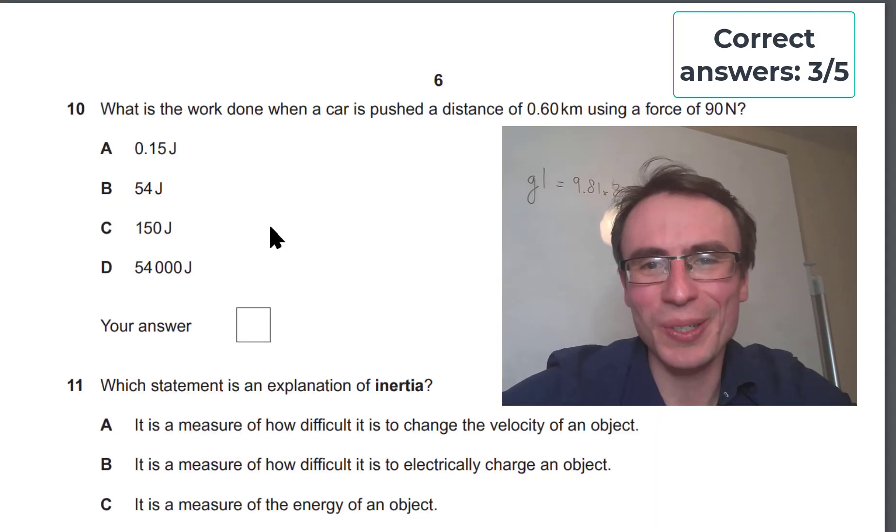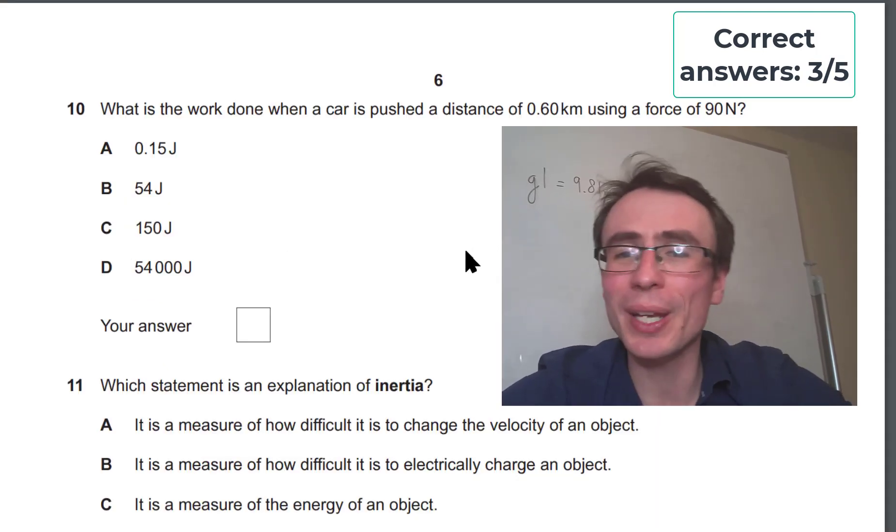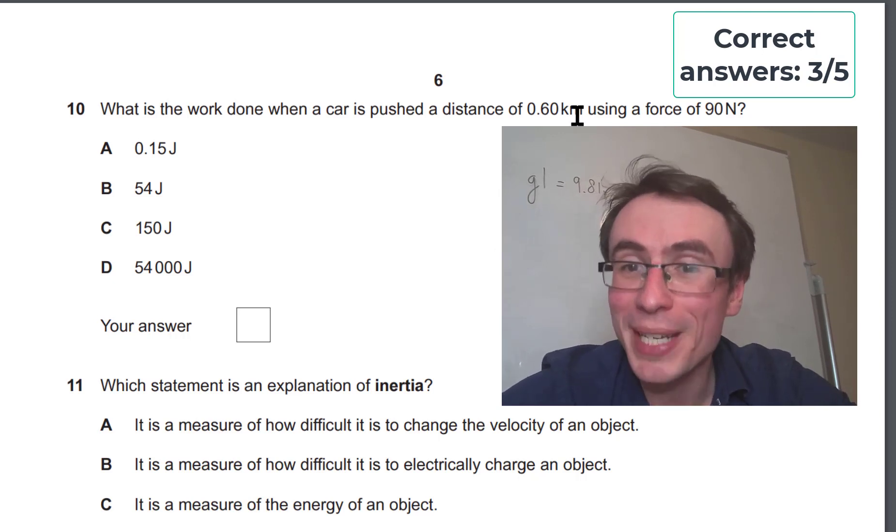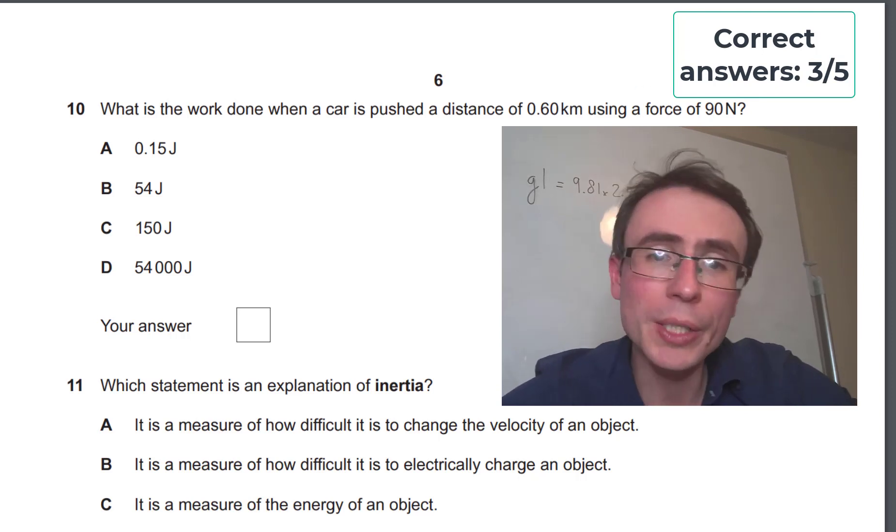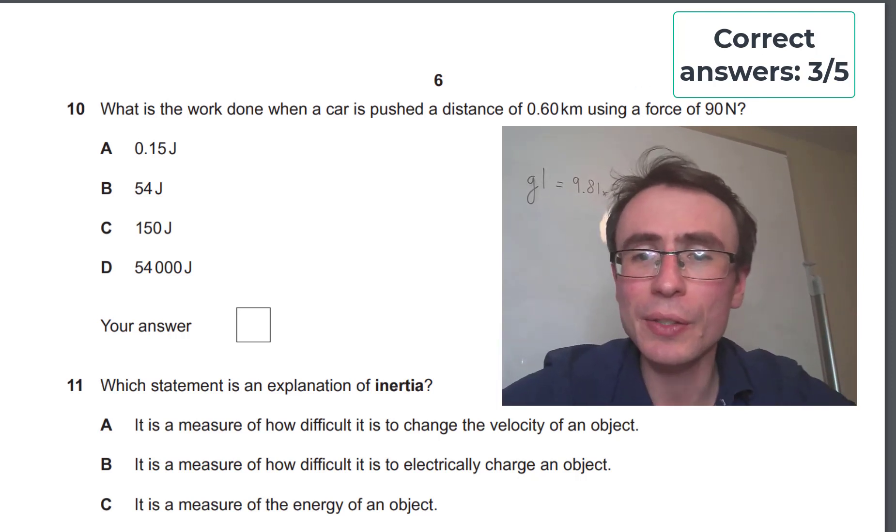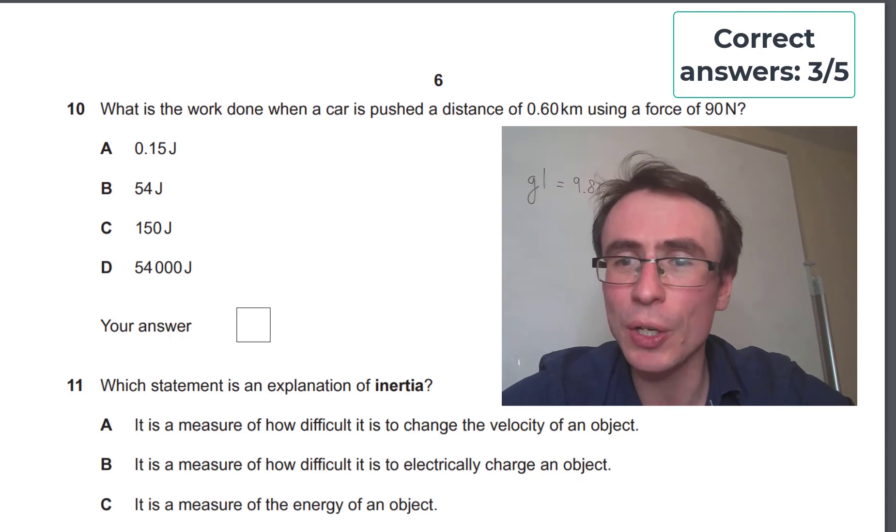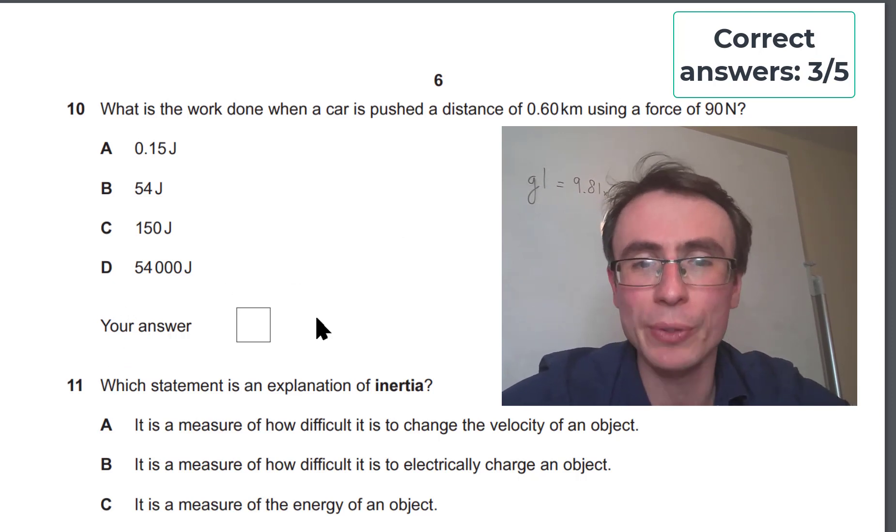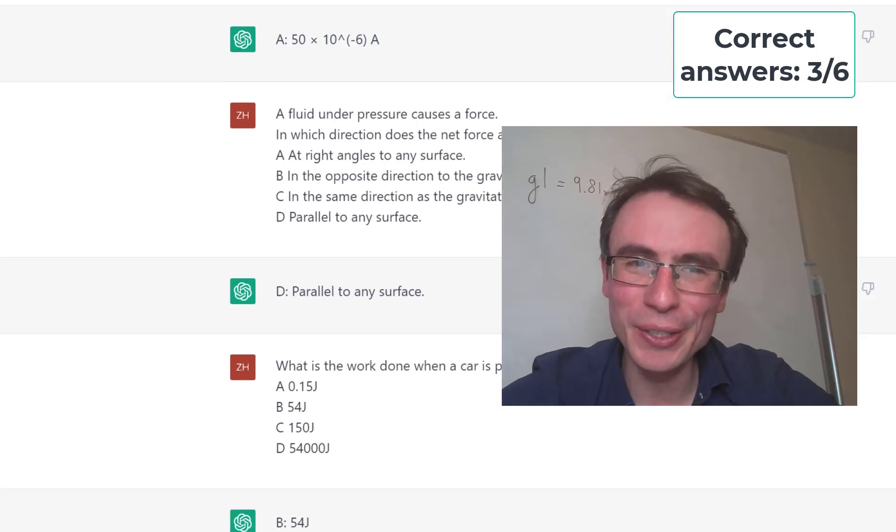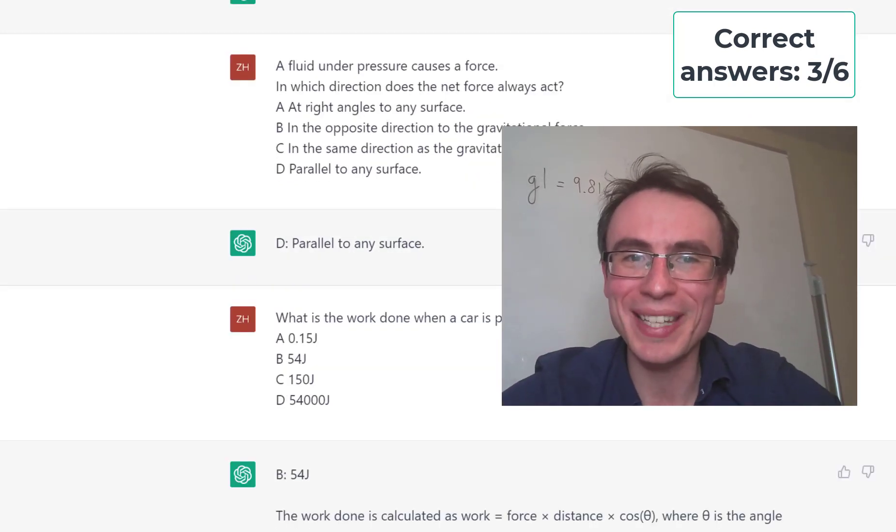Let's give it a mathematical question. What is the work done when a car is pushed a distance of 600 meters, converting the kilometers to meters, using a force of 90 newtons? So because work done is force times distance, we would need to multiply 600 by 90, giving us a grand total of 54,000. And it's forgotten to convert the units. It's doing all the typical mistakes that you might do when you're learning physics.